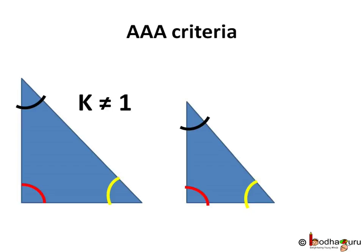Now when K is not 1, that is either K is less than 1 or K is more than 1, then AAA, that is angle-angle-angle, criteria determines the similarity. AAA means all corresponding angles are same.